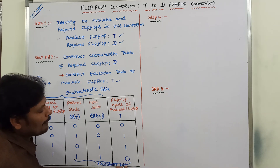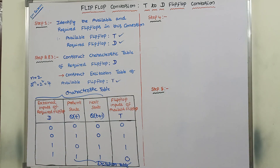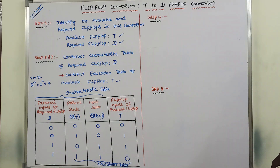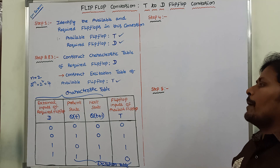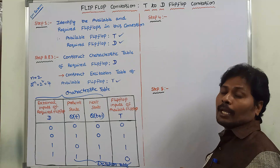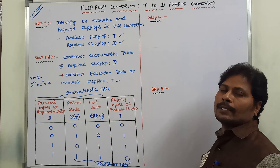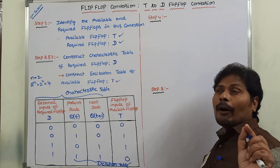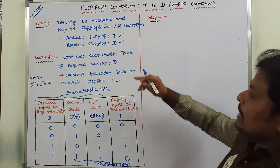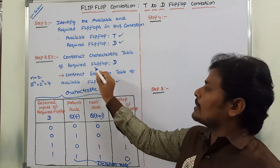The last three columns represent the excitation table of the T flip-flop, and the first three columns represent the characteristic table of the D flip-flop. If anyone wants more detail on the characteristic table and excitation table, please watch the previous videos. Steps 2 and 3 are now complete.